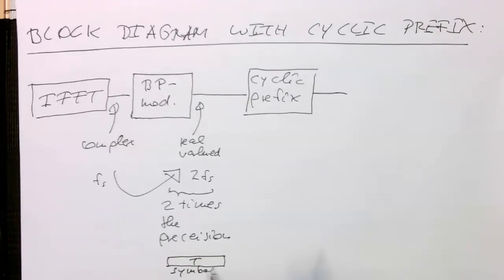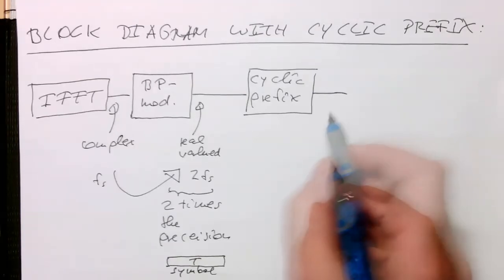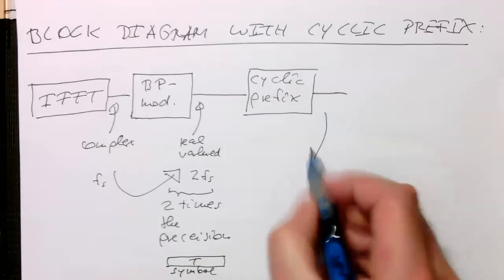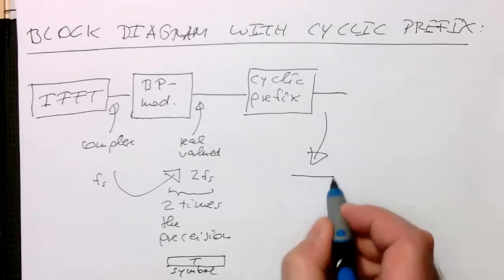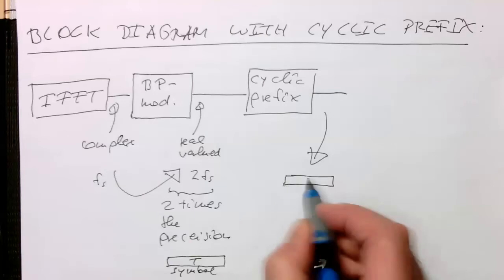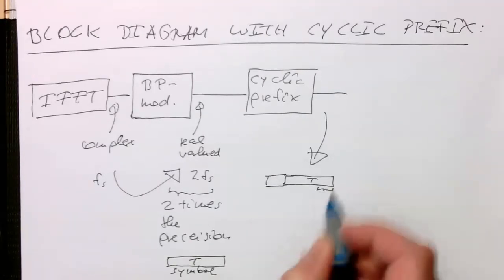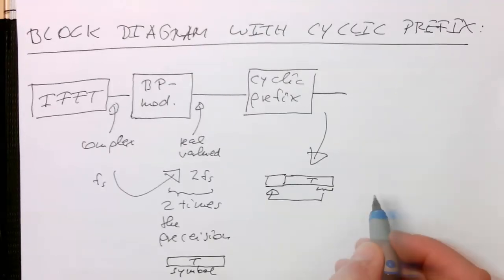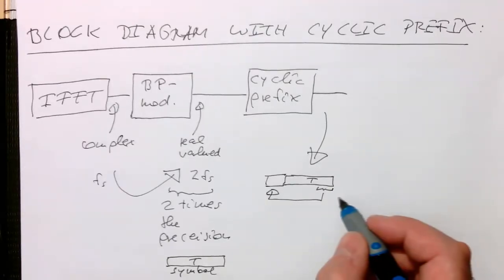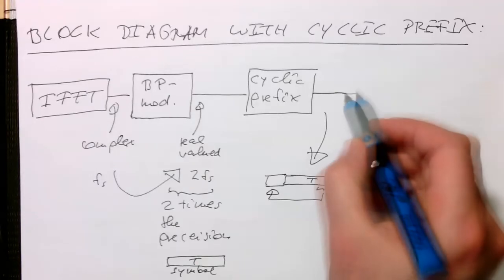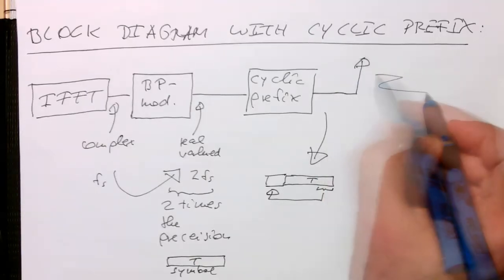Then here at this point here, then we have our symbol at length t, and then this section here is added to the front here as a fraction of the length, and then this is here transmitted.